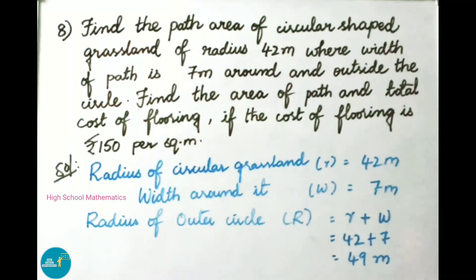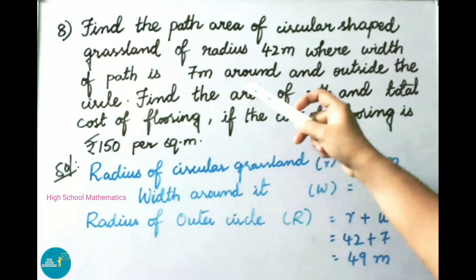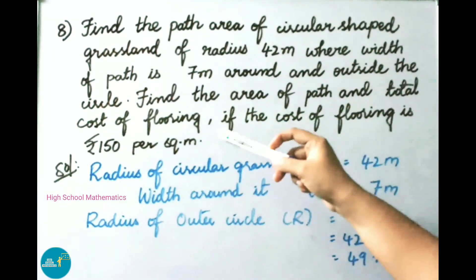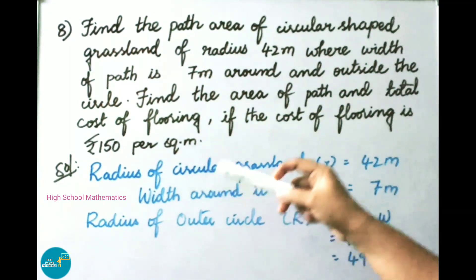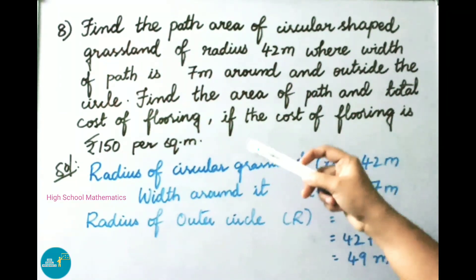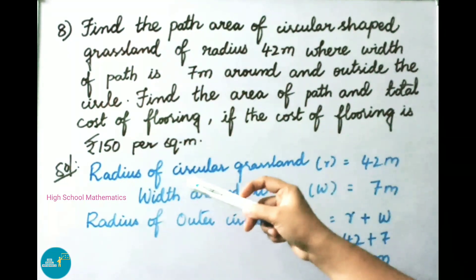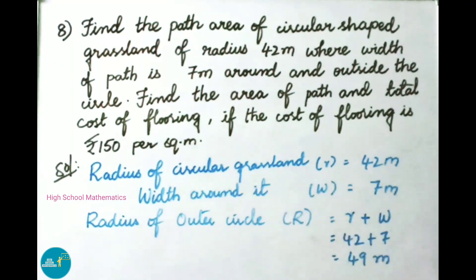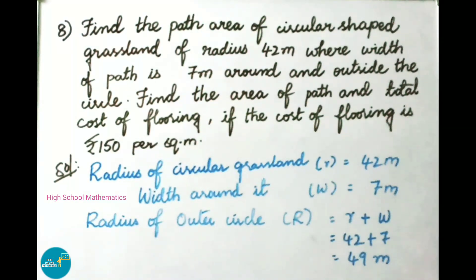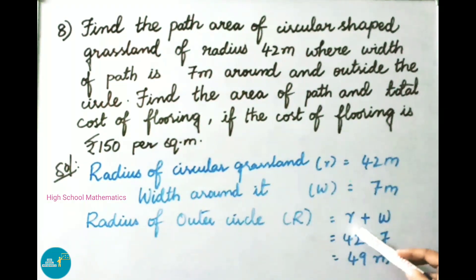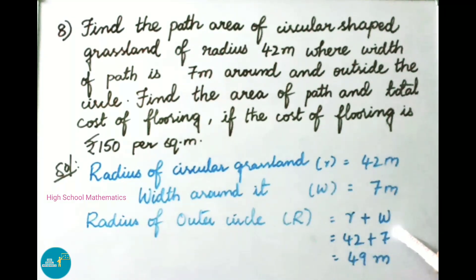See now question number 8. Find the path area of a circular shaped grassland of radius 42 meters where the width of the path is 7 meters around and outside the circle. Find the area of the path and total cost of flooring if the cost is 150 rupees per square meter. Radius of inner circle (small r) is 42 meters, width W is 7 meters. Radius of outer circle R equals r plus W, that is 42 plus 7 equals 49 meters.